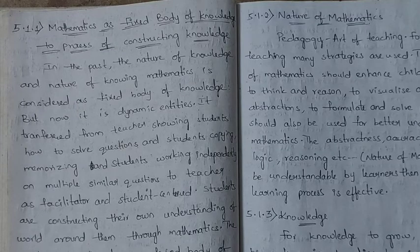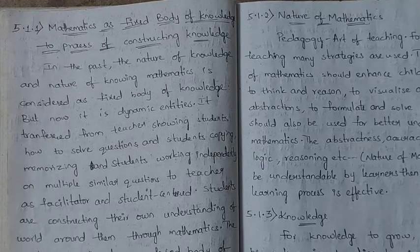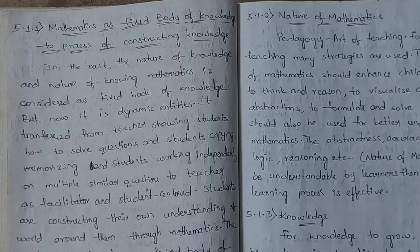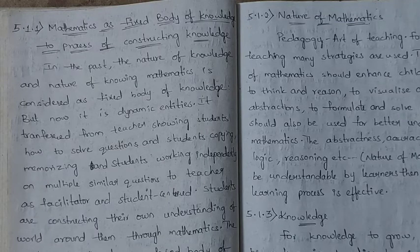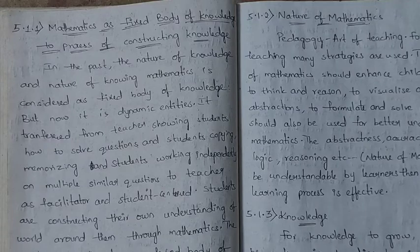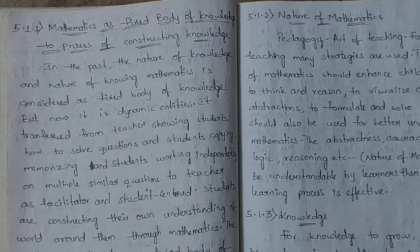In this class, we examined the shift from mathematics as a fixed body of knowledge to students constructing knowledge. We covered dimensions: nature of mathematics, nature of knowledge, learners, learning and teaching, and assessment. In the next class, we will cover science curriculum and scientific method and inquiry dimensions, where pedagogical shifts also occur.